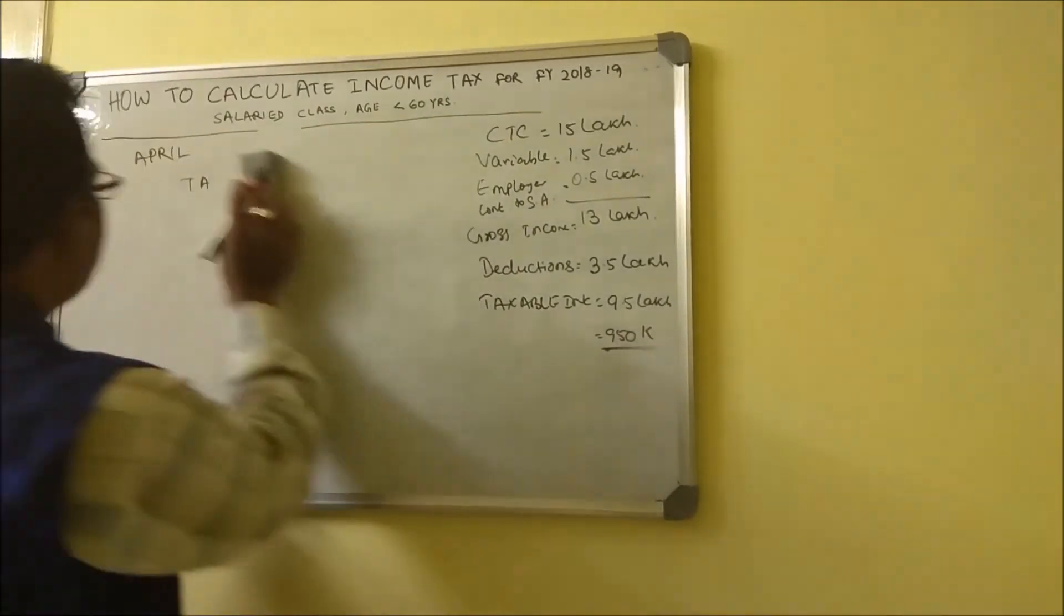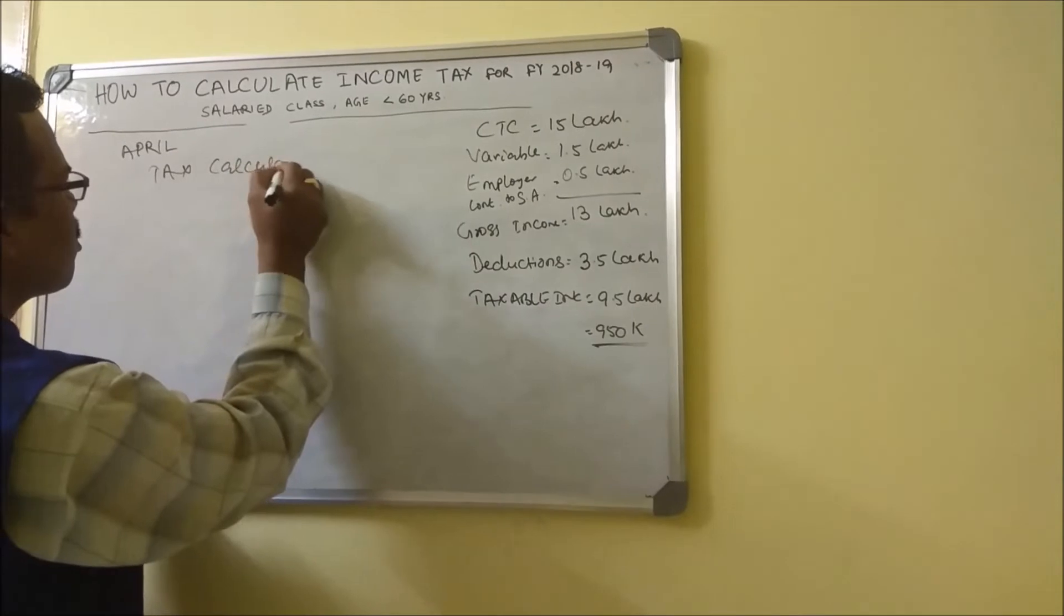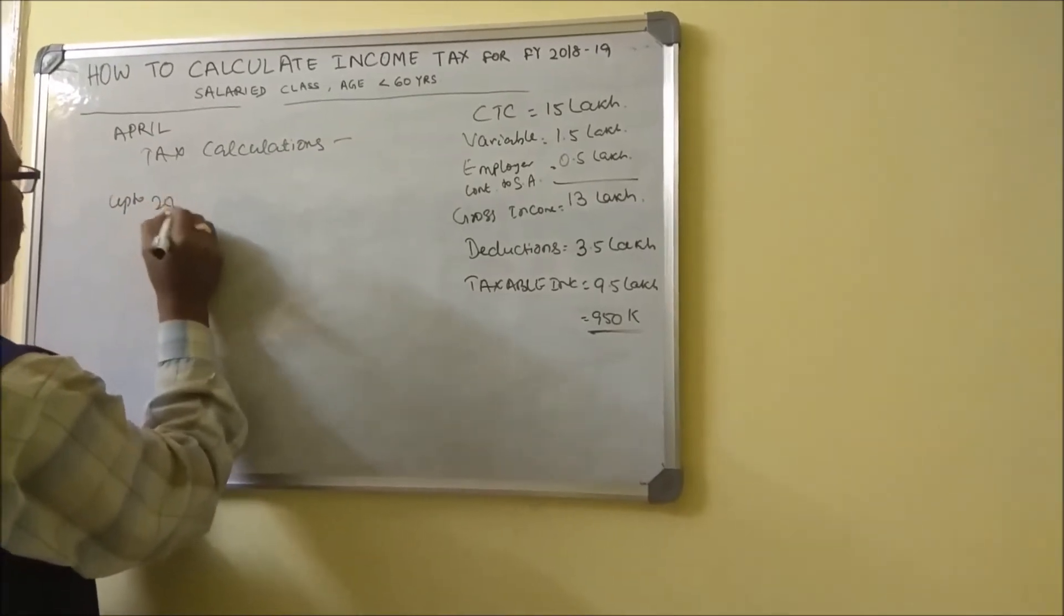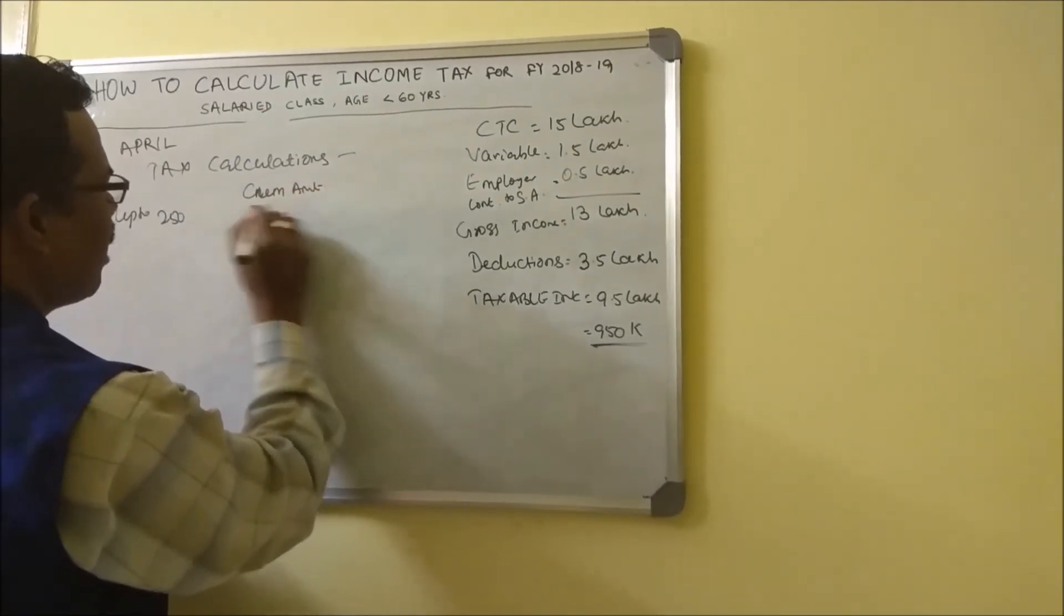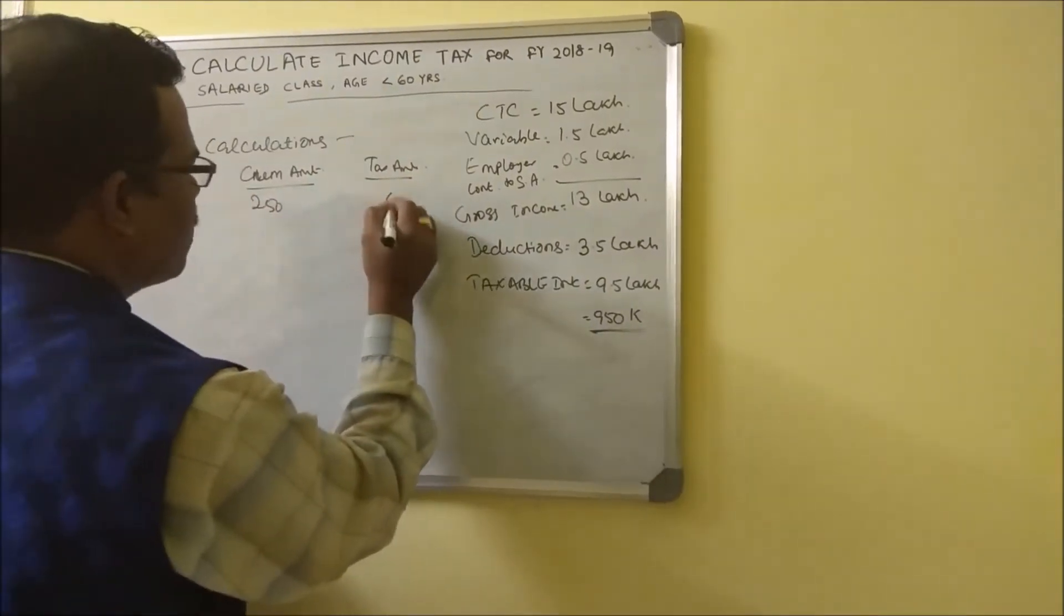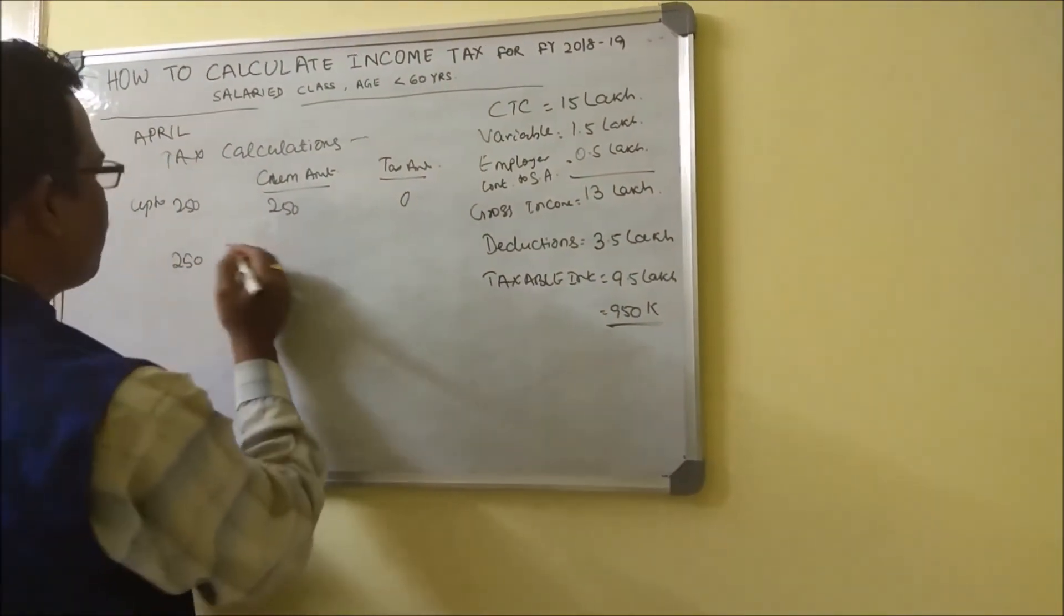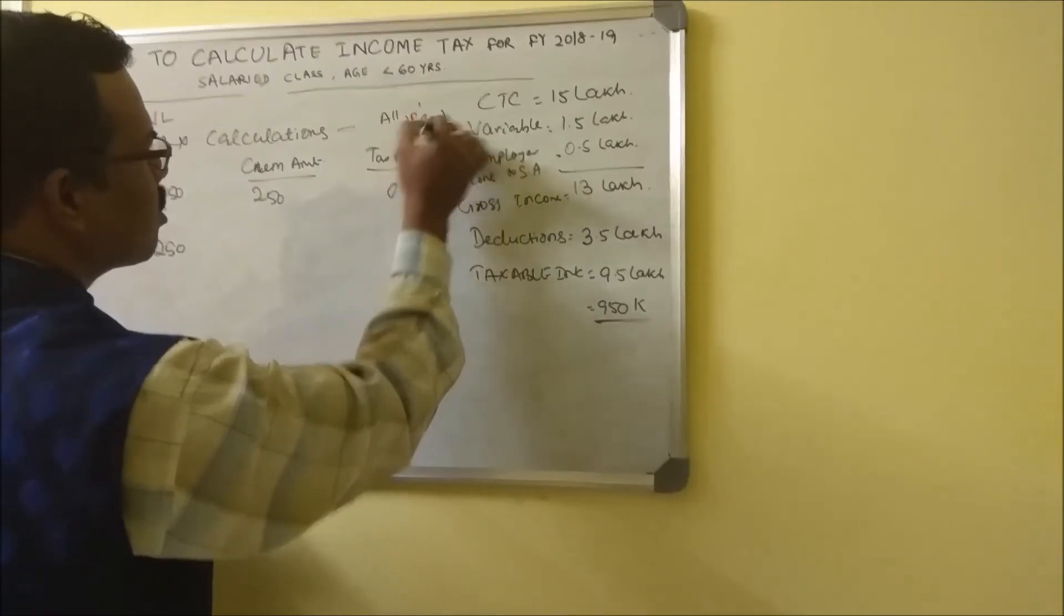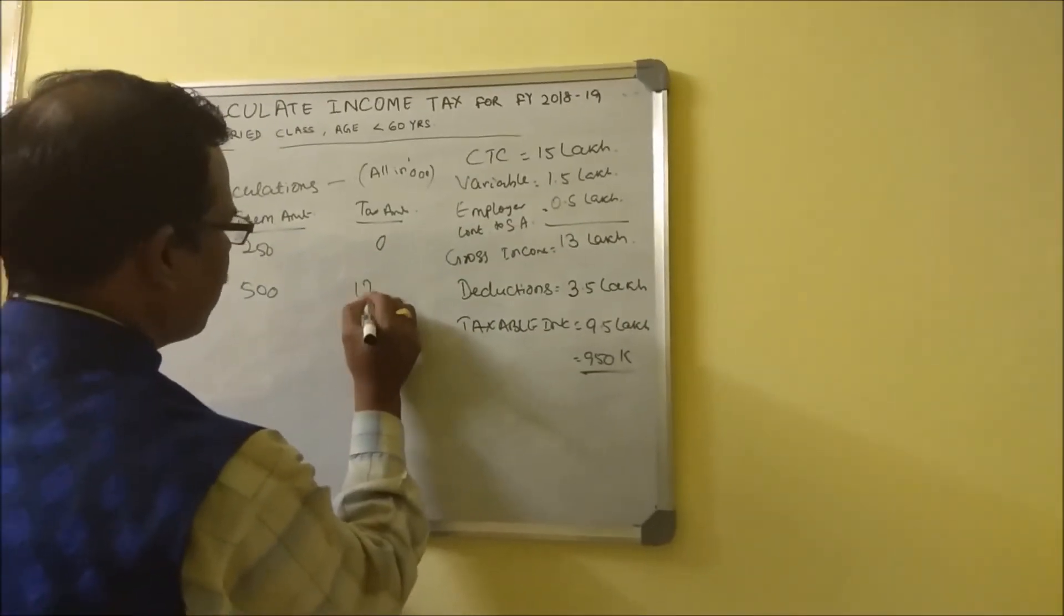Now let's see what is the tax calculation, how the tax calculation goes. Up to 250 you have a cumulative amount and we have a tax amount. Cumulative is 250, tax amount is zero. Beyond 250 to 500, another 250k - all are in thousands - means 500k, so the tax amount comes to 12,500.